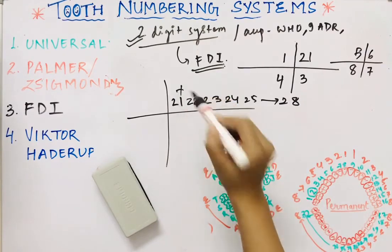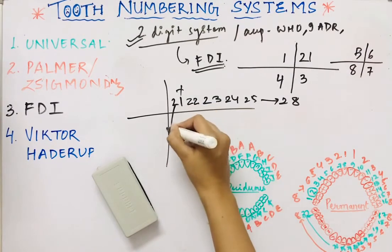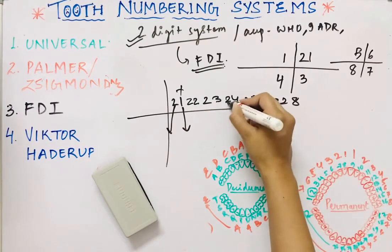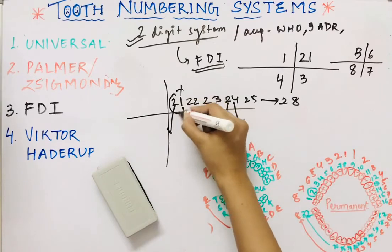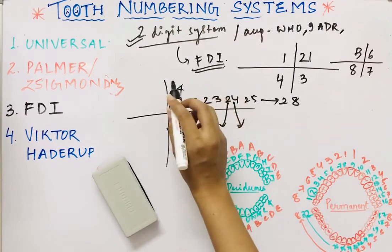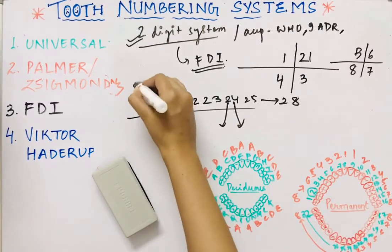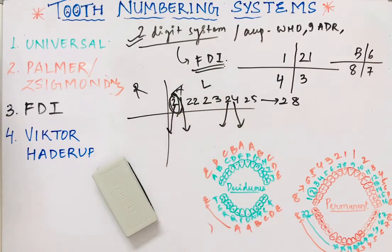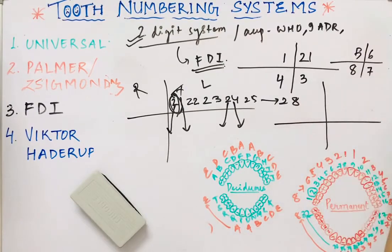Note that the notation is pronounced as individual digits — not 'twenty-one' but '2, 1.' So '2, 1' means the 2nd quadrant, 1st tooth, which is the central incisor. '2, 4' is the 2nd quadrant, 4th tooth, which is the first premolar. Since it is quadrant 2, it denotes maxillary left quadrant. This is how teeth are identified in the FDI system.